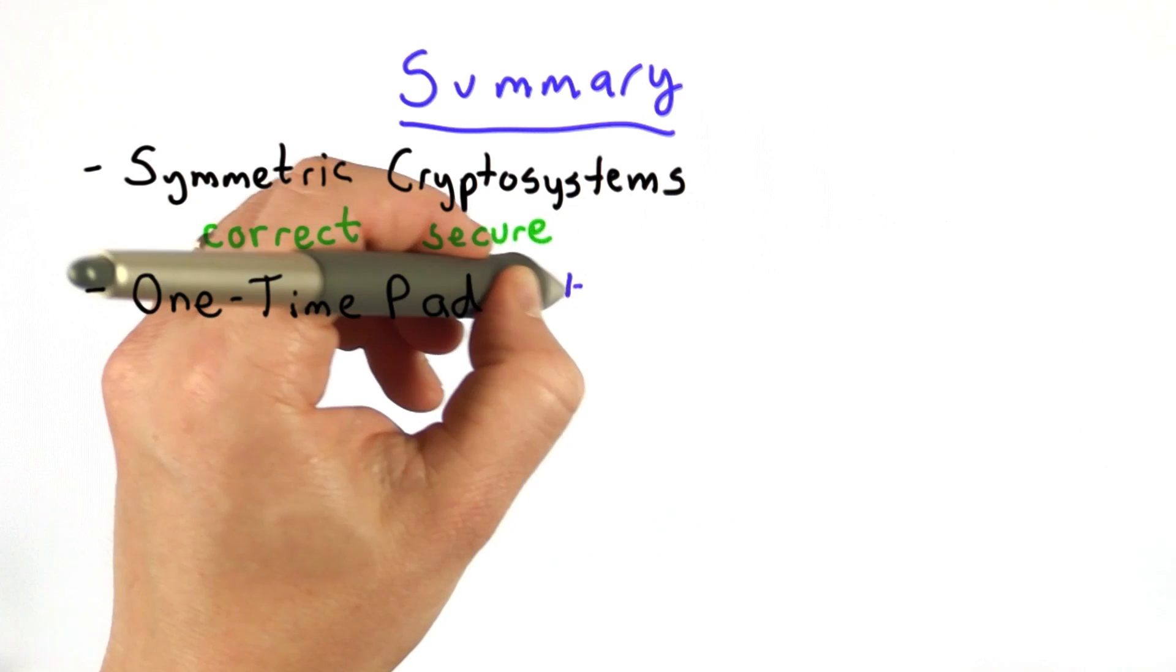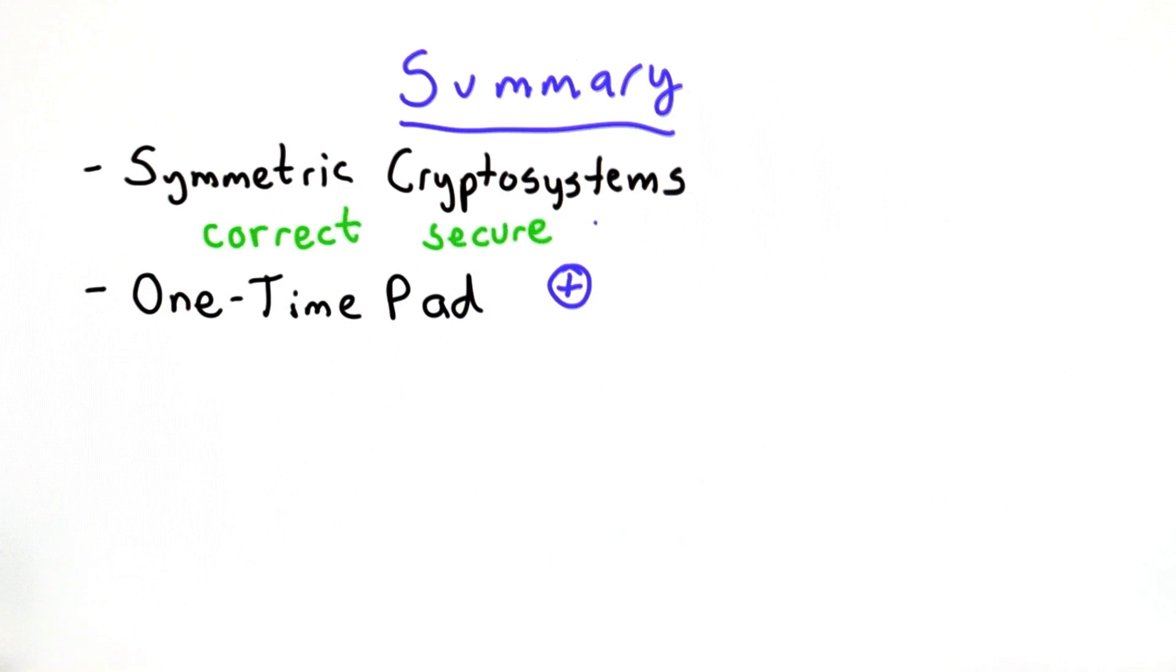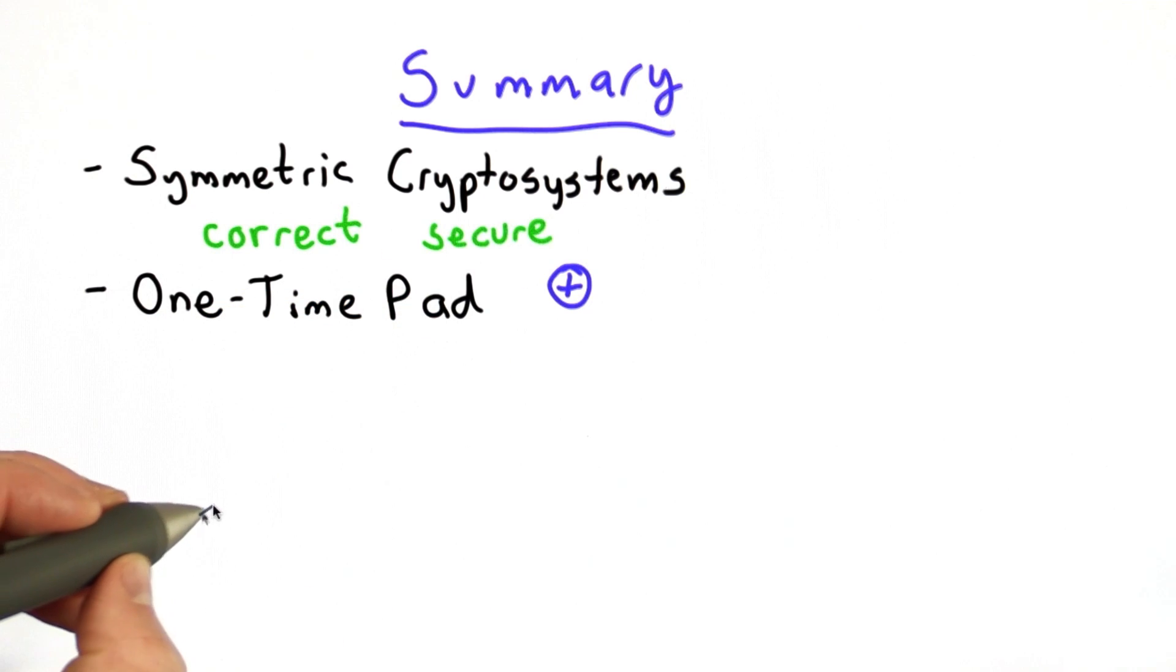We introduced the one-time pad, which is a very simple but important cryptosystem, and it's all based on using the XOR operation. As long as we have a perfectly random key that's as long as the message, the one-time pad gives us perfect security.